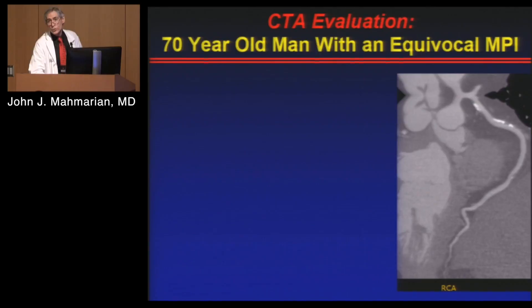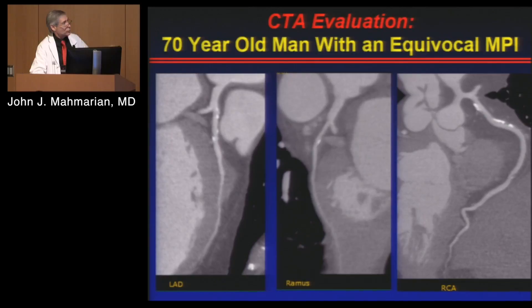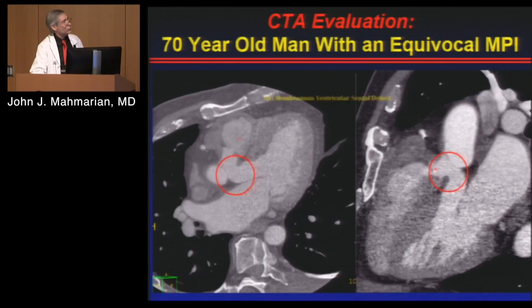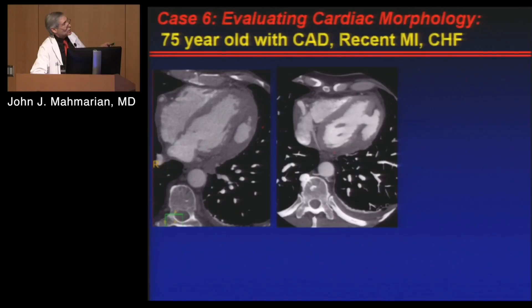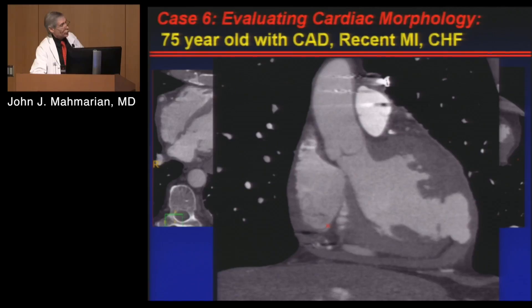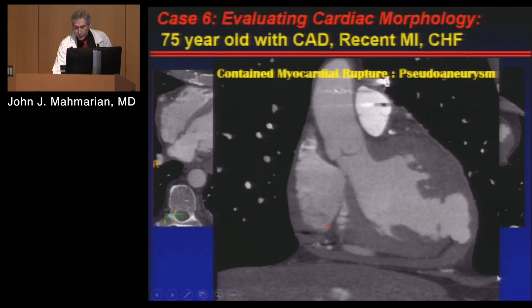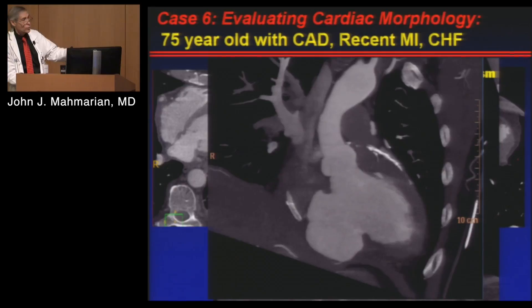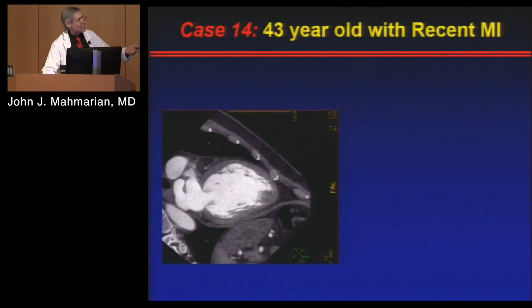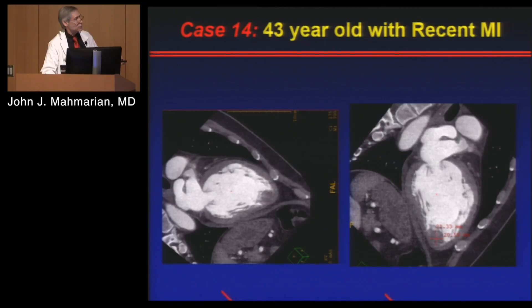CT is commonly used in patients with equivocal stress tests. One patient had minimal plaquing in the right coronary, LAD, and ramus — so an equivocal MPI but no significant obstructive disease — though CT also identified a membranous VSD. Another patient with a recent MI showed contrast indicating a pseudoaneurysm — he blew out the wall of his heart, which we can also look at dynamically. CT can pick up apical thrombus after heart attacks, and in a patient with a stent in the right coronary artery and chest pain, we found a patent stent but also a left atrial myxoma — a mass in the left atrium — and the patient went for surgery.